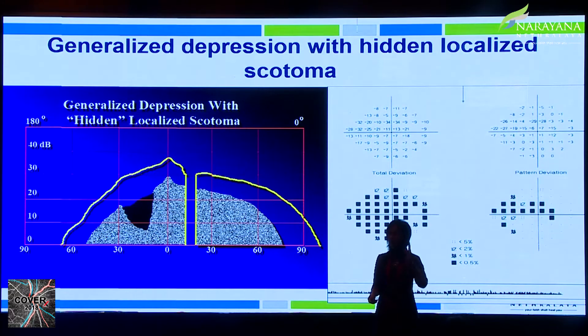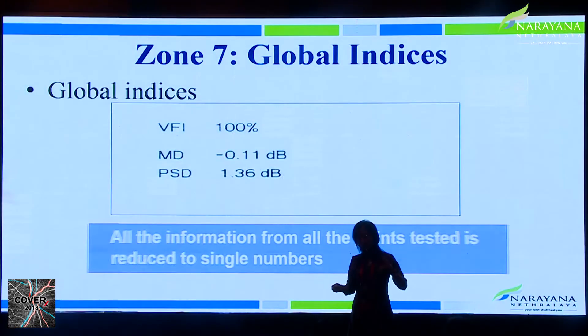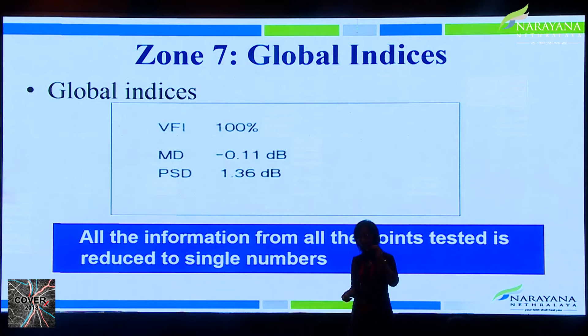If there is a generalized depression with a hidden localized scotoma, you will see much more abnormality on the total deviation plot and less on the pattern deviation plot. Zone 7 covers global indices, which give an overall view of the field reduced to simple numbers — VFI, mean deviation, and pattern standard deviation — providing an overall idea of how depressed a particular field is.